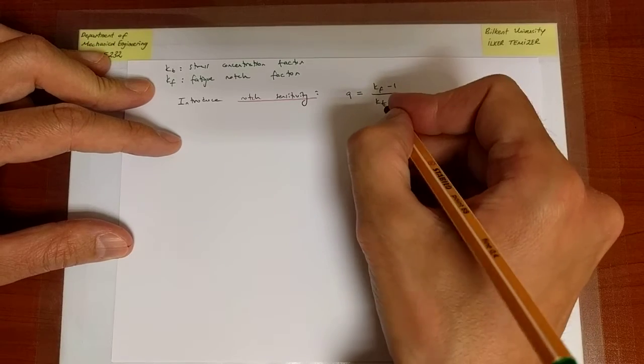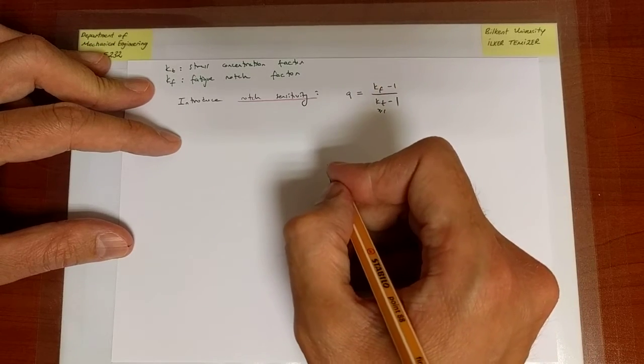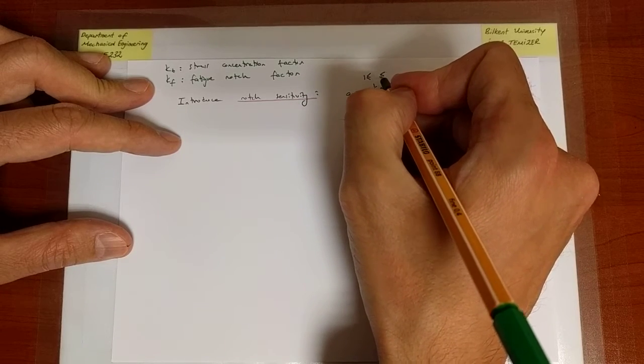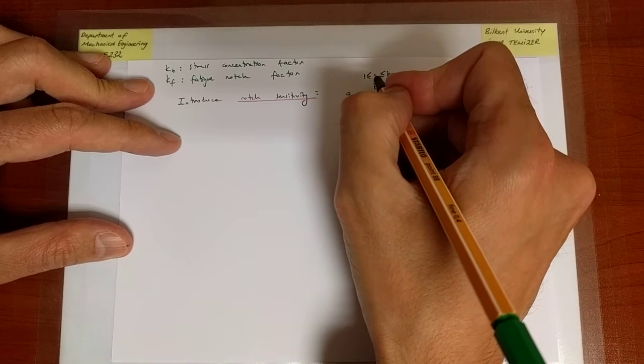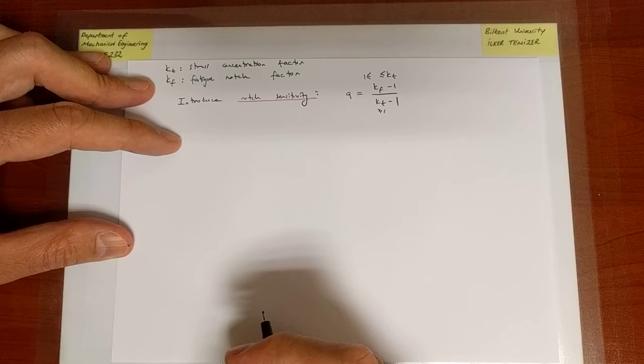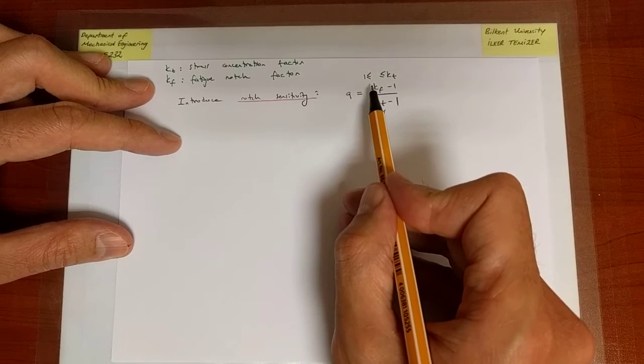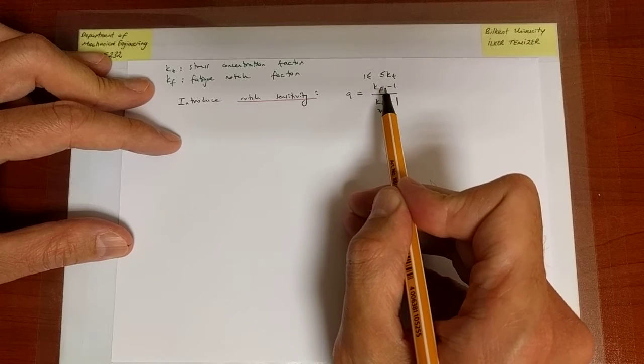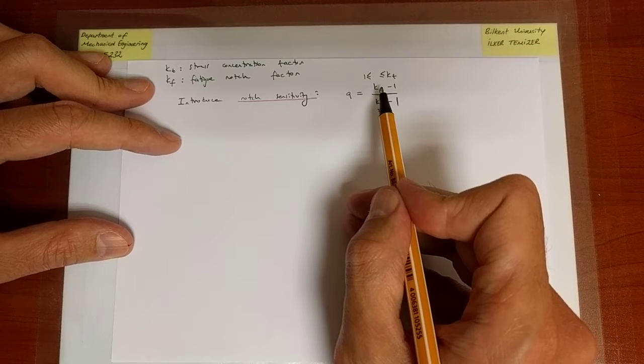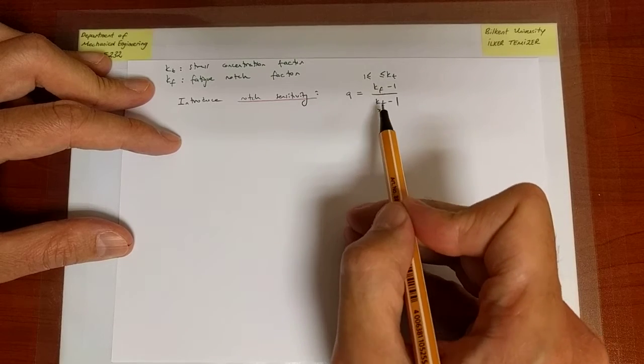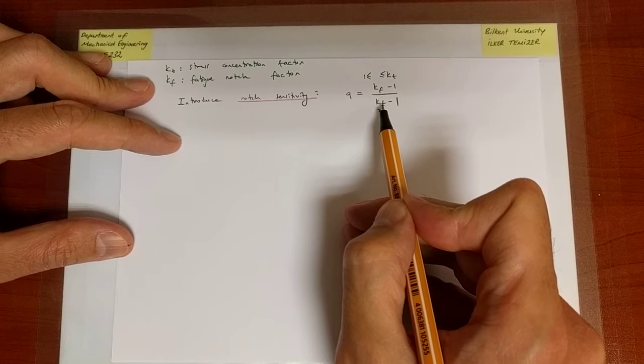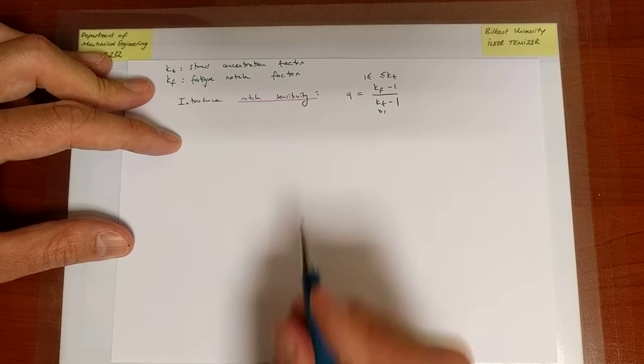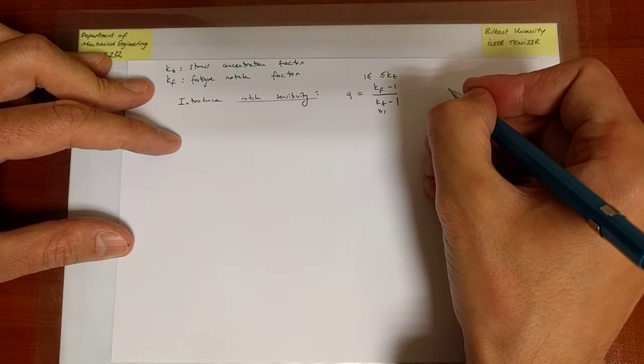Notice that KT is certainly greater than or equal to 1. KF, on the other hand, is less than or equal to KT and is greater than or equal to 1. Therefore, the largest value that we could possibly have is equal to 1, in which case KF is equal to KT. It doesn't matter how small KT is, how close it is equal to 1, that ratio will always be equal to 1. In other words, the value of Q, the maximum value, will be equal to 1.